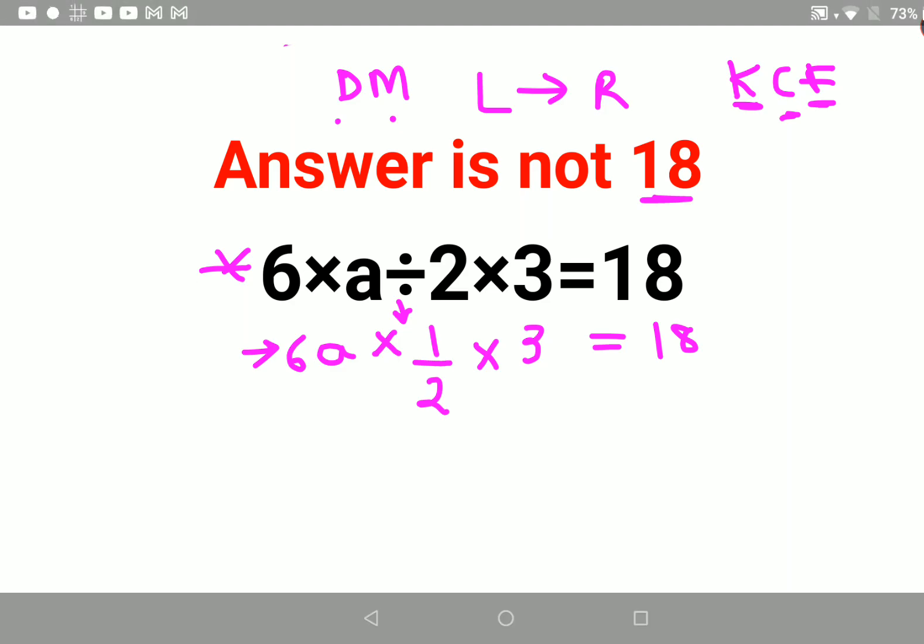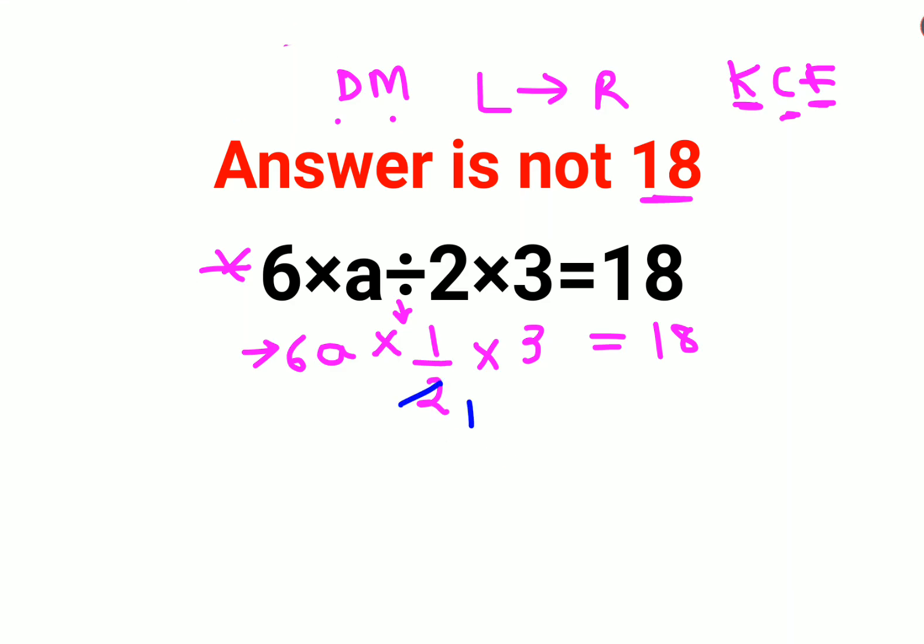Now if you see we can cancel this and this becomes 3a. So now I am left with 3a into 3 is equals to 18. So basically this comes out to be 9a is equals to 18.